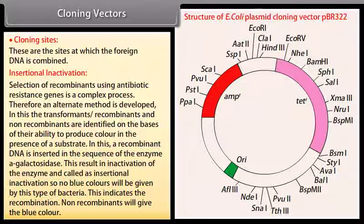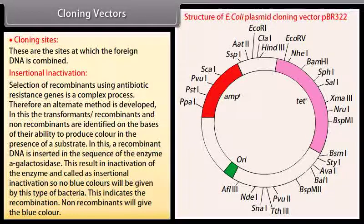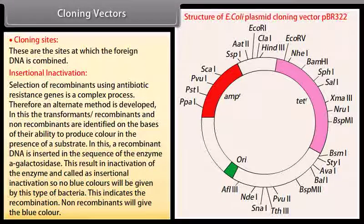the transformants, recombinants and non-recombinants are identified on the basis of their ability to produce color in the presence of a substrate. In this, a recombinant DNA is inserted in the sequence of the enzyme beta-galactosidase. This result in inactivation of the enzyme and called as insertional inactivation, so no blue colors will be given by this type of bacteria. This indicates the recombination. Non-recombinants will give the blue color.